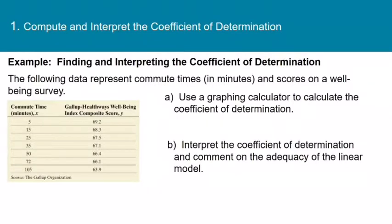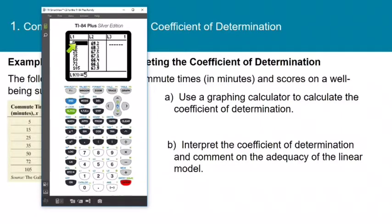Now we're going to do an example together. The following data represent commute times in minutes and scores on a well-being survey. Use the graphing calculator to calculate the coefficient of determination, which is r squared. And then we're going to interpret the coefficient of determination and comment on the adequacy of the linear model. So I've already taken my calculator and entered the commute times in list one and the well-being scores in list two.